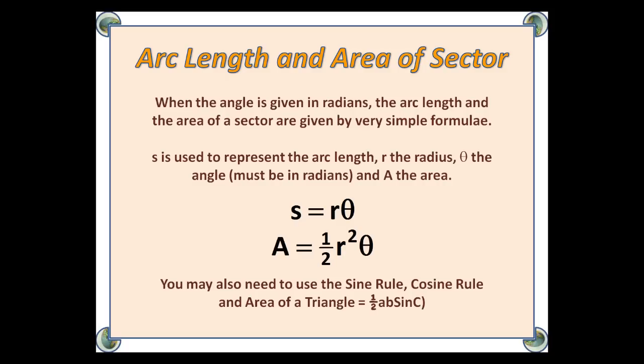S is used to represent the arc length, r the radius, theta the angle, which must be in radians, and A the area. We have S equals r theta, and A equals half r squared theta.